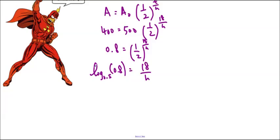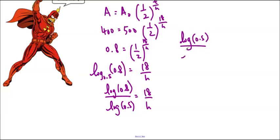Now, some calculators have this. They'll have log base whatever of whatever. And you can certainly use that if you like. But if you don't have that on your calculator, that's okay. You can still do it. We're going to get log of 0.8 over log of 0.5 is equal to 18 over h. And because the h is in the bottom, I'm actually going to flip the top and the bottom for both sides. So log of 0.5 over log of 0.8 is equal to h over 18.